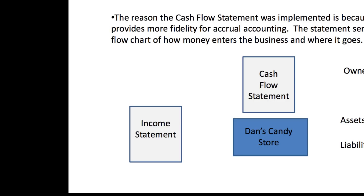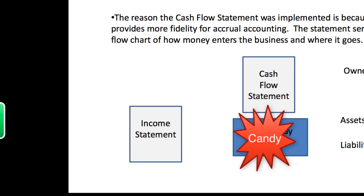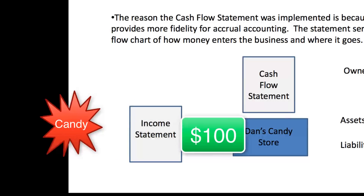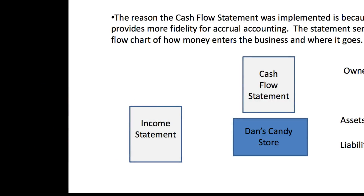Let's say that Dan sells enough candy to generate income of $100. His net income would be $100, and that $100 would be reported on the income statement. At the top of the income statement is the revenues, and at the bottom is the net income or the profit. So that $100 of profit flows into Dan's Candy Store — that's the profit he made, and the income statement would capture that.